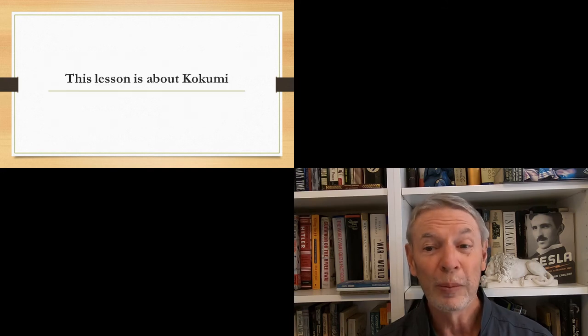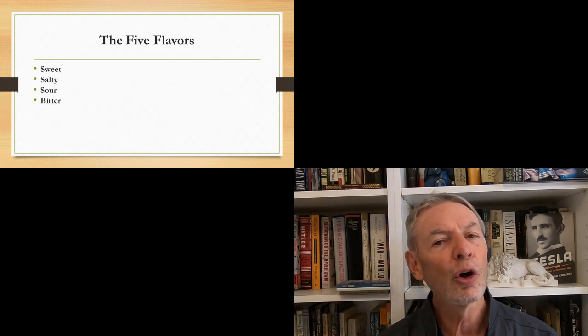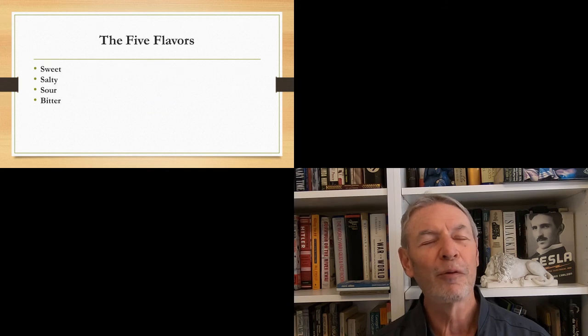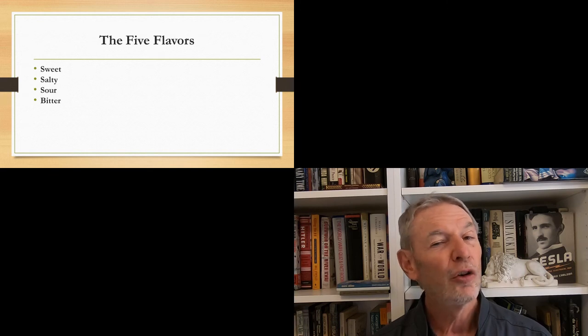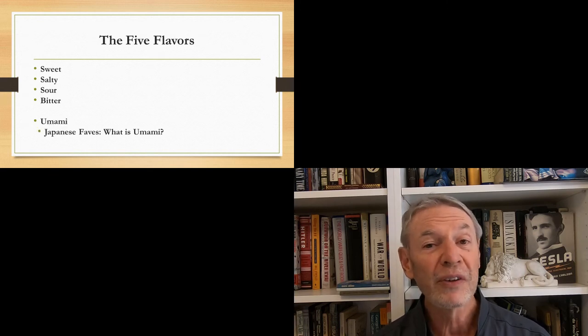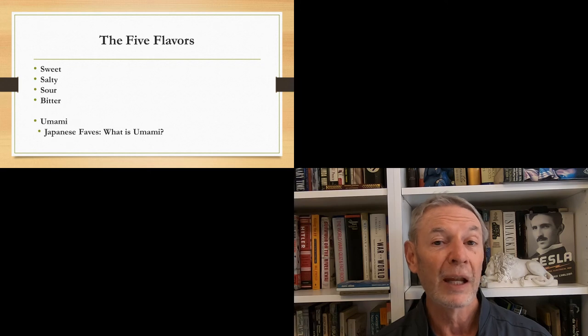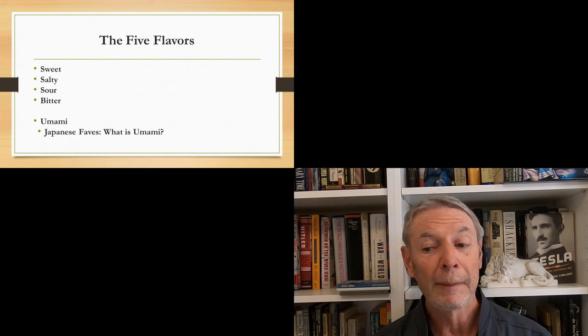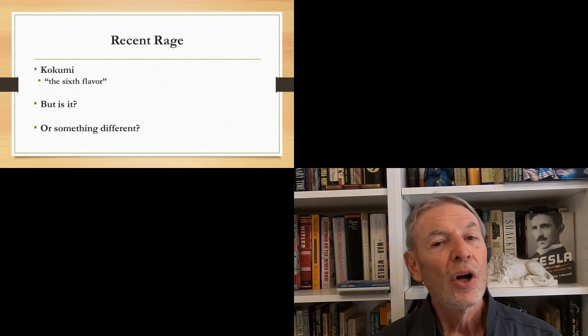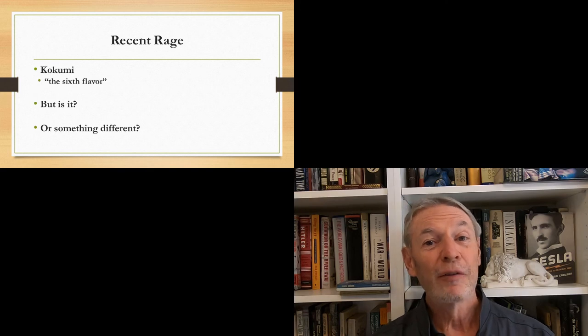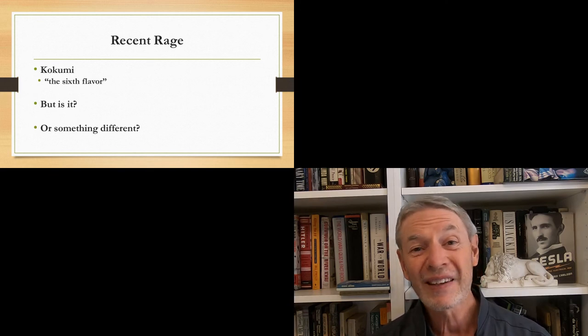This lesson is about Kokumi. Now you've probably heard of the four basic flavors of Western cooking: sweet, salty, bitter, and sour. You've probably also heard of the fifth taste, which was identified in Japan called Umami. Now, recently, the rage has been about Kokumi, which some people have called the sixth flavor.